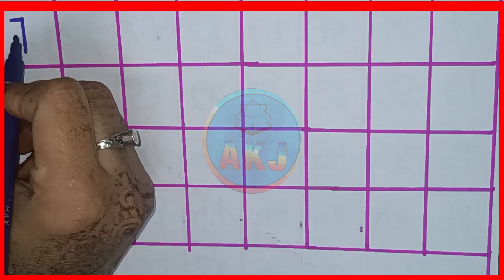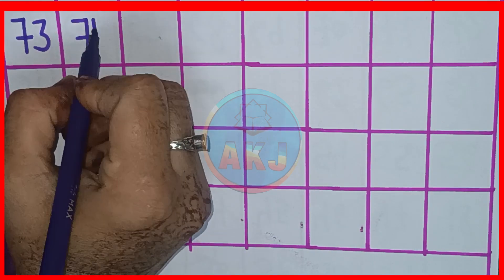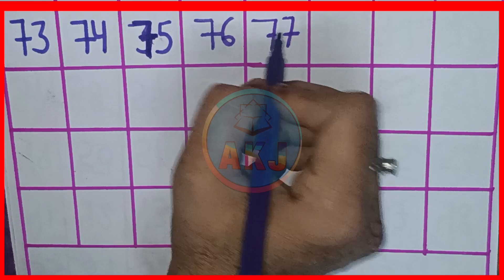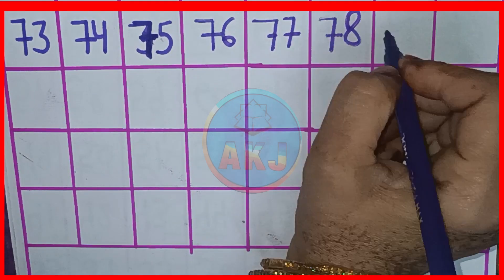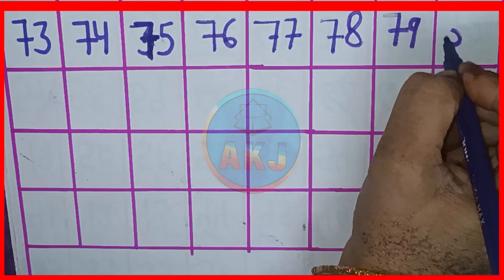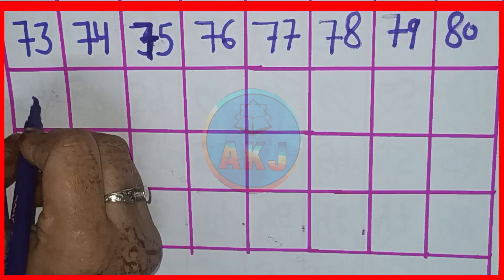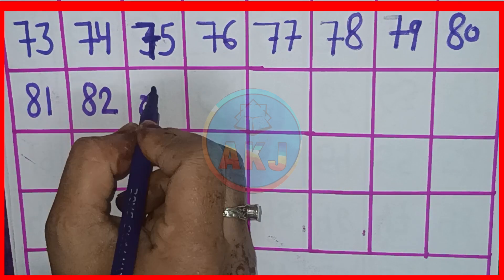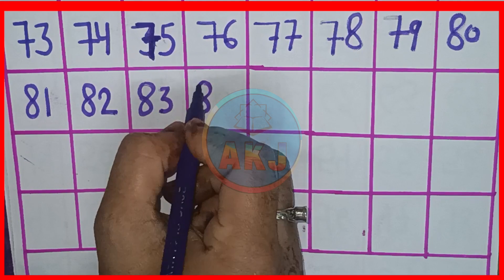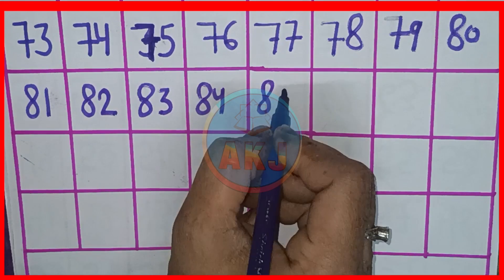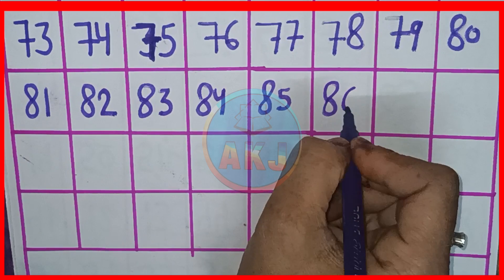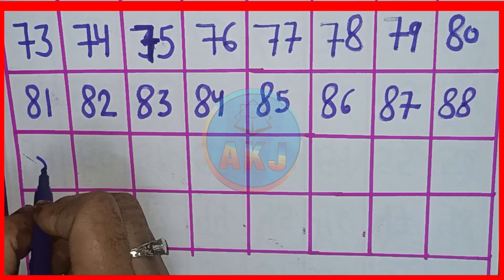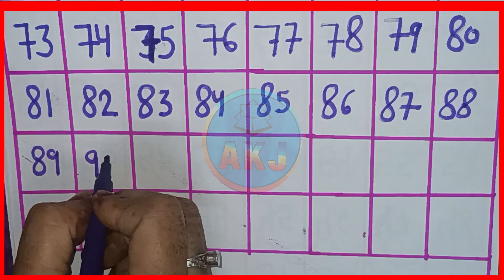Next line pe, 73, 74, 75, 76, 77, 78, 79, 80, 81, 82, 83, 84, 85, 86, 87, 88, 89, 90.